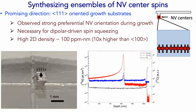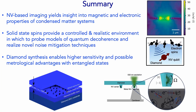We also want to grow these 1-1-1 oriented samples. These are our first growths that started just two months ago and they work really well — we have very localized and really high density, actually even higher density along 1-1-1 than along 1-0-0, which was a pleasant surprise. So I think this is a very promising way to get strongly interacting dipolar systems that don't average to zero. With that I will summarize and thank you very much for your time.